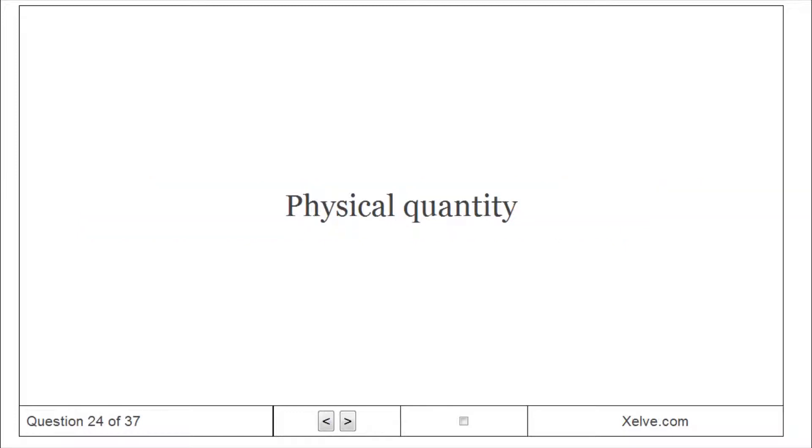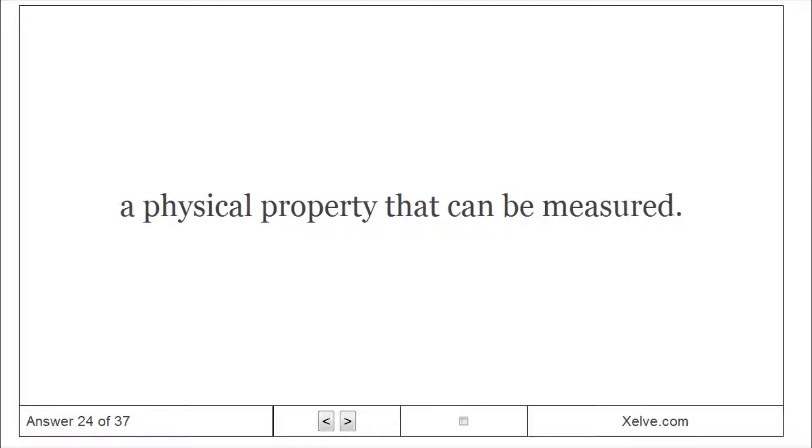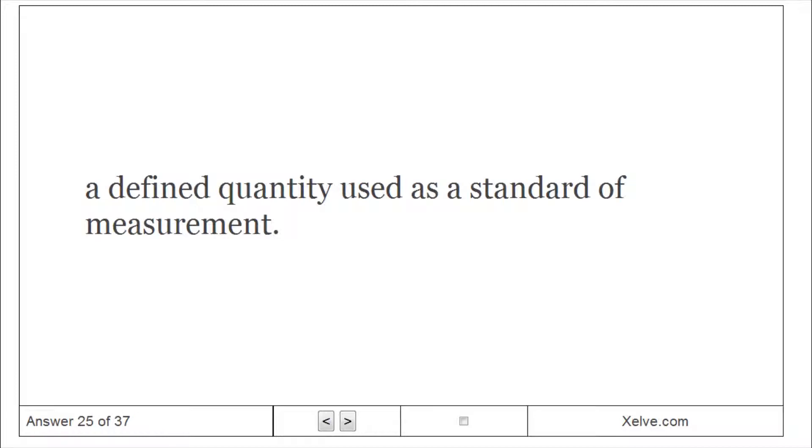Physical Quantity: A physical property that can be measured. Unit: A defined quantity used as a standard of measurement.